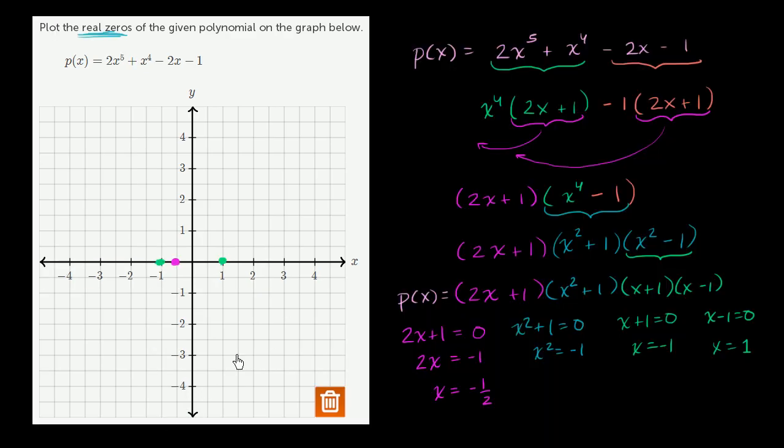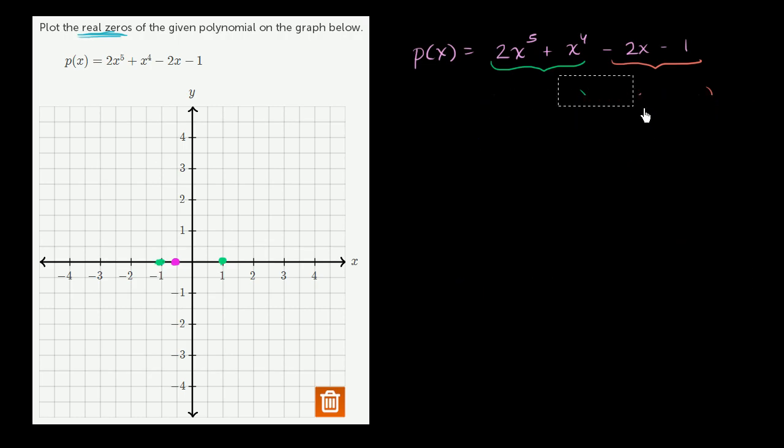Now one thing that might be bugging you is you just happened to group this in exactly the right way. What if I try to group it in a different way? Let's try to do that. Just to show you that this isn't voodoo, there's several ways to get there. What if instead of writing it in highest degree term order, you were to write it like this: p of x is equal to 2x to the fifth minus 2x plus x to the fourth minus 1. Even this way, you could do a fairly interesting grouping. If you group these two together, they have the common factor 2x. You factor 2x out, you get 2x times x to the fourth minus 1. Then this can be rewritten as plus 1 times x to the fourth minus 1.